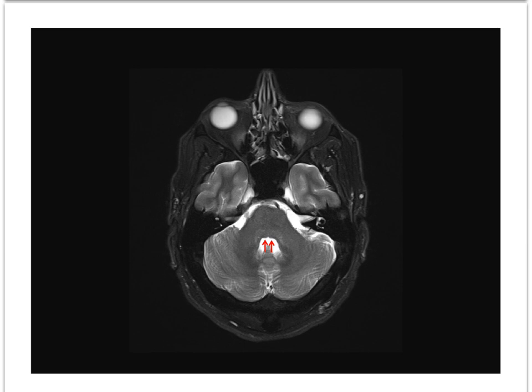At this same level, slight bumps at the floor of the 4th ventricle represent the facial colliculae. The trigeminal nerve on the right side can be seen exiting from the anterolateral upper pons. Slight imperfections in patient positioning have made the left side trigeminal nerve not lie in the same plane. These fluid-filled spaces along the posterior and lateral aspect of the cavernous sinuses are the Meckel's caves, through which the trigeminal nerve passes.